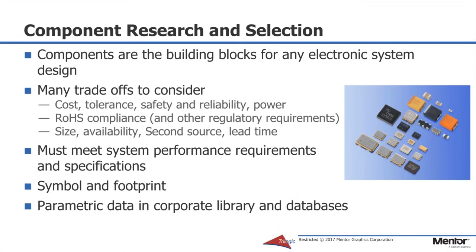You can set it up to allow controlled access to design or manufacturing partners. It can be easily integrated in different ECAD or MCAD systems. One of the areas where we would like to reduce friction is the component research and selection process. Components are the building blocks for any electronic design. We need to weigh multiple trade-offs and consider not only the functionality of components, but also their costs, RoHS compliance, size, availability, and second source availability in making our decisions. They must meet particular system performance requirements and specifications. We may need a symbol and footprint to add to the CAD database and we want the parametric data loaded into our corporate database.